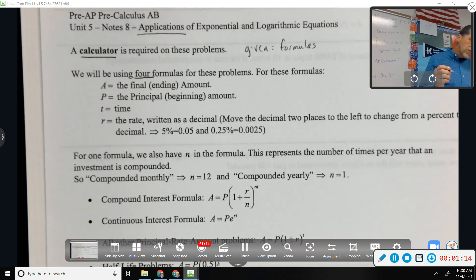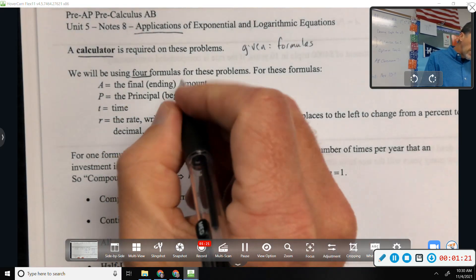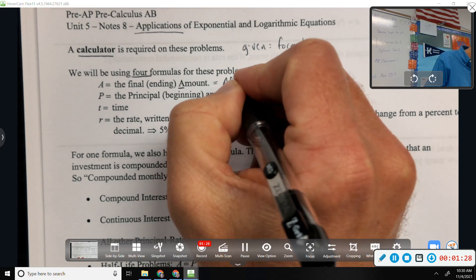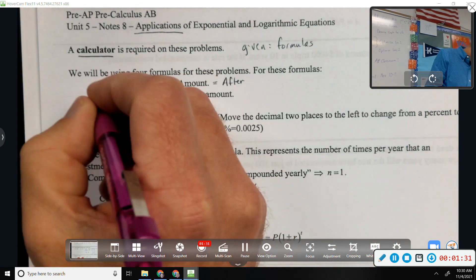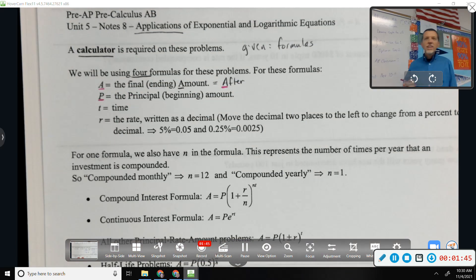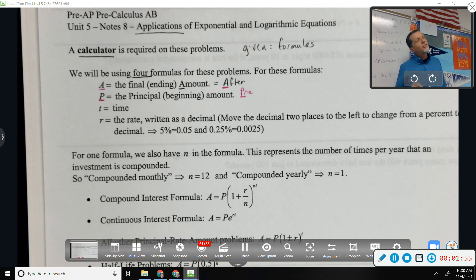All right, we'll be using four formulas for these problems. Here's some of the variables and what they mean. A is the final amount, A for amount. A is also, like this isn't the official word, but I like to call it the after, A for after. P is the principle, which is the beginning amount. But a better word that starts with P that means the before amount - what English prefix do you know that starts with P and means before? Pre. So the P is the pre, the before, and the A is the after.